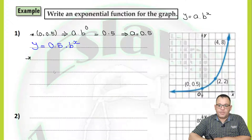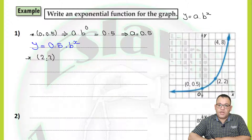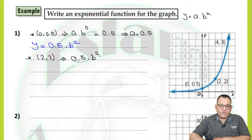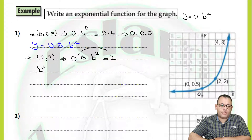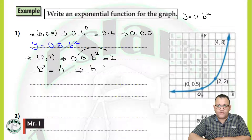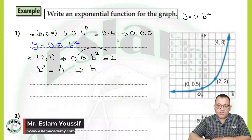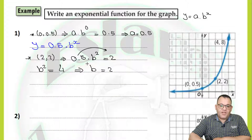Now use the second point, which is (2, 2). So instead of x replace with 2, instead of y replace with 2: 0.5 multiplied by b to the power 2 equals 2. By solving — shifting 0.5 to the other side — b to the power 2 equals 4. Then b equals positive or negative the square root of 4, but we only need the positive value. So b equals 2. Now we have found the value of b.